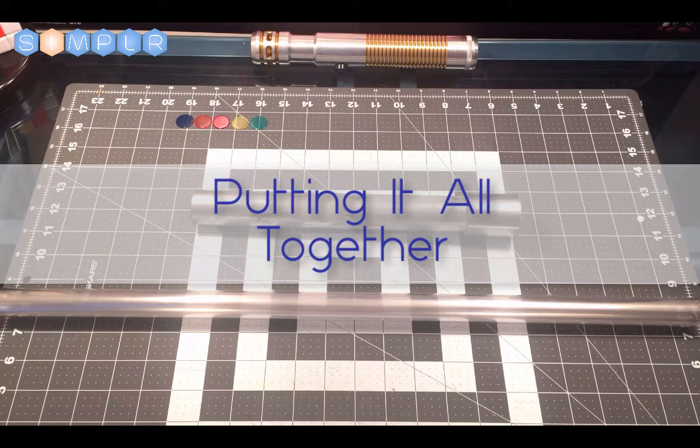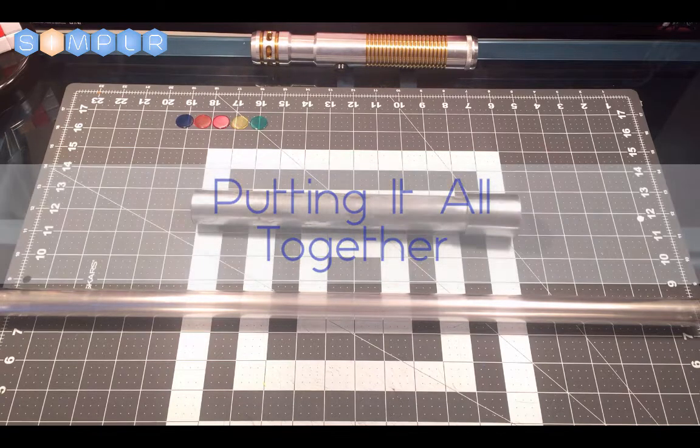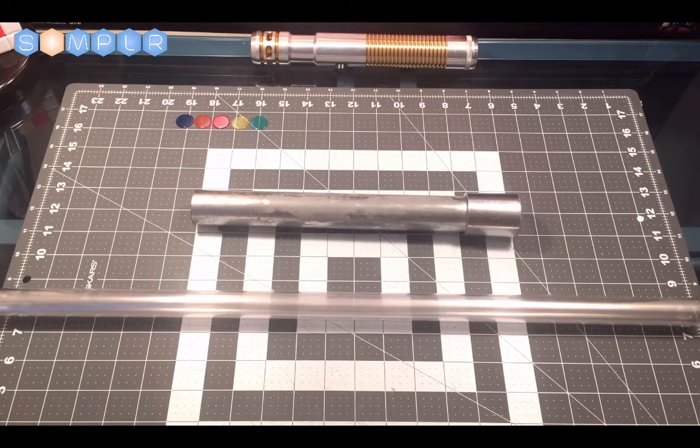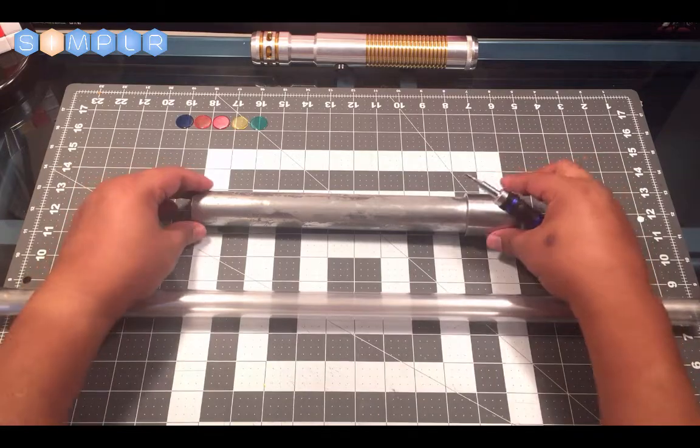So now that we have our hilt and our blade put together with our light source and our hilt, we're going to put everything together and fire up our lightsaber so we can see how it looks.